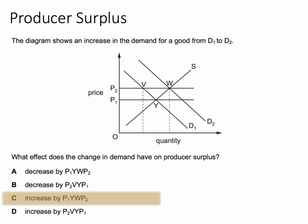Now there's been an increase in demand, so you'd expect the revenues of the producer to go up, and they do, and also the producer surplus. So we can eliminate options A and B.